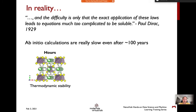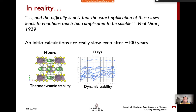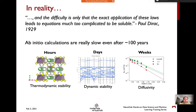Unfortunately, this is still true after about 100 years. Even with the approximation using density functional theory, ab initio calculations are still too slow to run on a large scale. For example, when we evaluate the thermodynamic stability of a new material, those calculations can take hours on a supercomputer. For more advanced properties like dynamic stability using phonon calculations, those can take probably days.